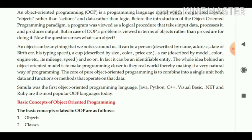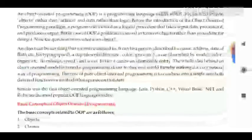So the question arises: what is an object? An object can be anything that we notice around us in our surroundings like table, blackboard, chalk, duster, book, bag. It can be a person described by name, address, date of birth, typing speed.